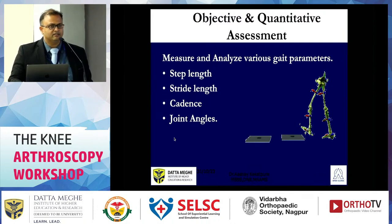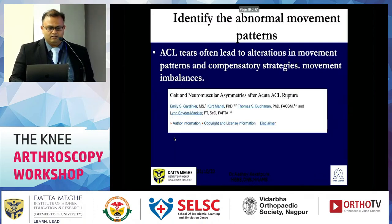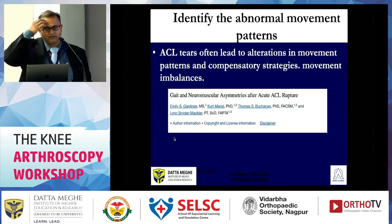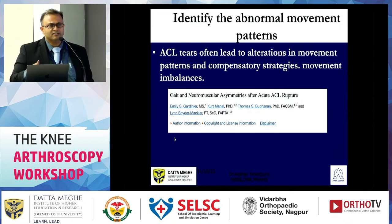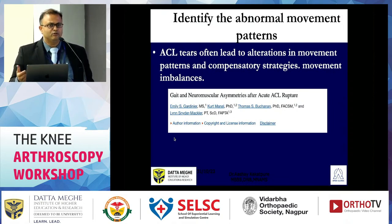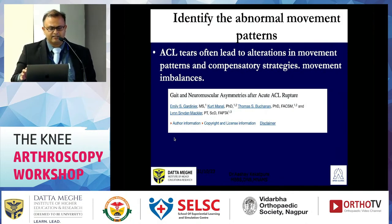We measured and analyzed various parameters of gait: the step length, stride, cadence, joint angles, and identifying abnormal movements. ACL tear often leads to alteration in movement patterns, compensatory strategies, and movement imbalances. The disturbances are so subtle — as we were discussing yesterday evening — that even the patient doesn't know, and even after that slight shift in gait, unless they are made aware, they will keep compensating. We need to wean them right back into their normal gait.